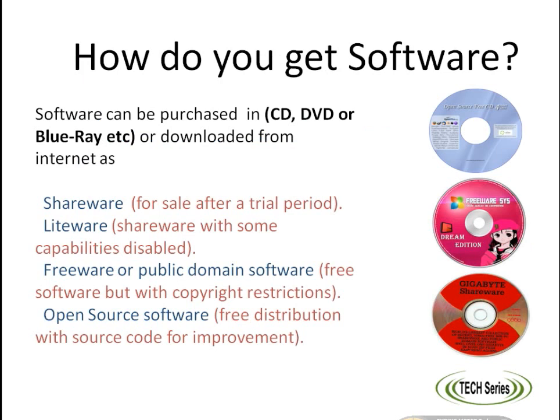The next question is: how do we get software? Software can be purchased or downloaded from the internet. It can be purchased on Blu-ray, CD, or DVD, or you can download it from the internet. Shareware is created for sale after a trial period.